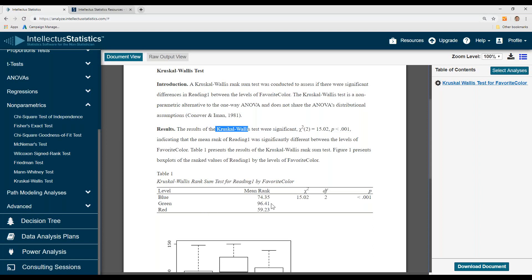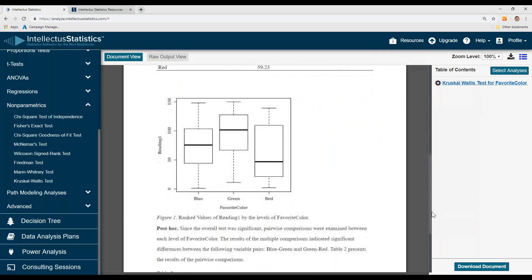And here's our different favorite colors, and there's the mean ranks, and that's in table 1 here. That's an APA-like table. Here's our box plot.